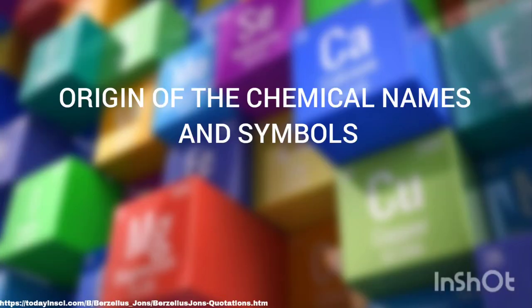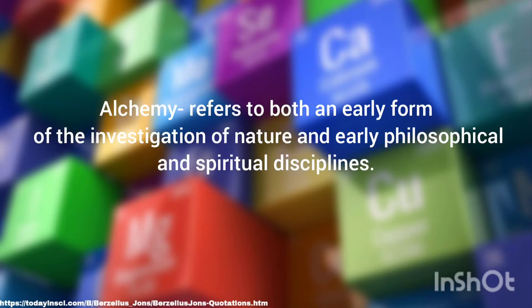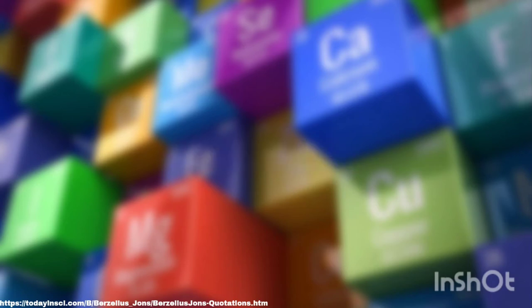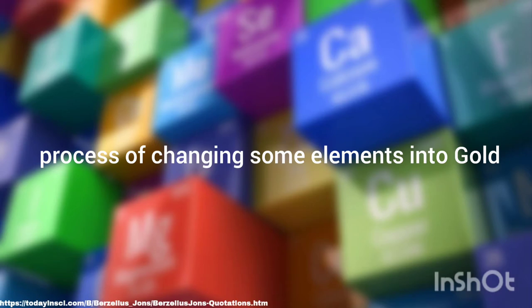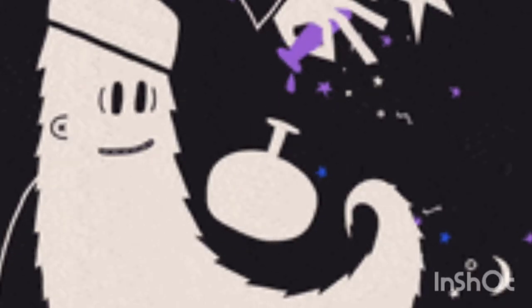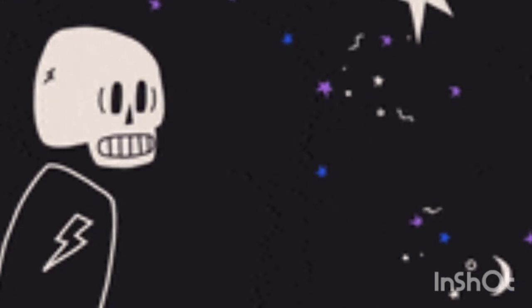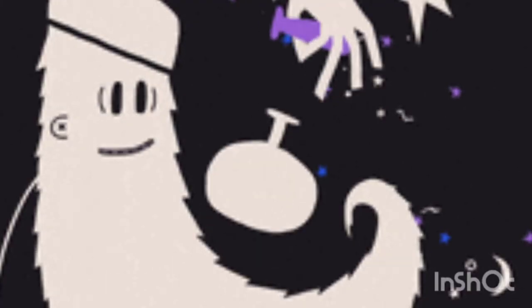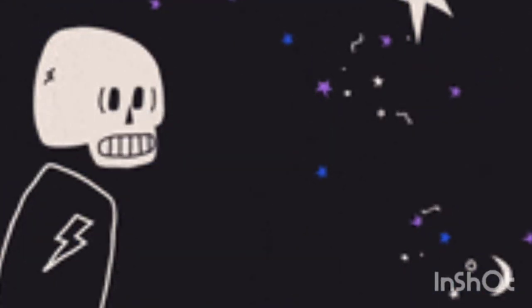The origin of the chemical names and symbols: Alchemy refers to both an early form of investigation of nature and early philosophical and spiritual disciplines. Alchemists were known for their popular culture practice of changing some elements into gold. They were the first to introduce symbols of the elements in the Middle Ages, preserving their work with confidentiality through the use of symbols.